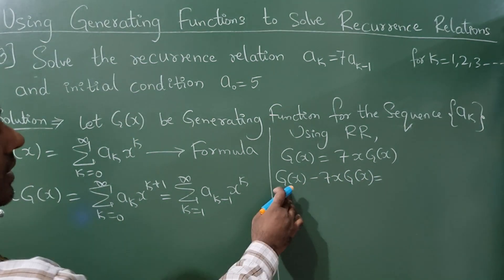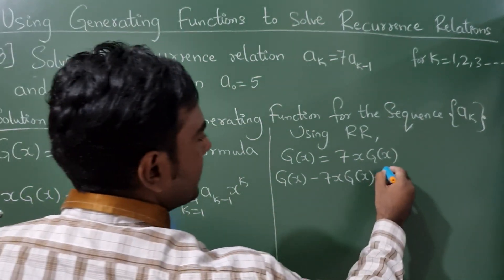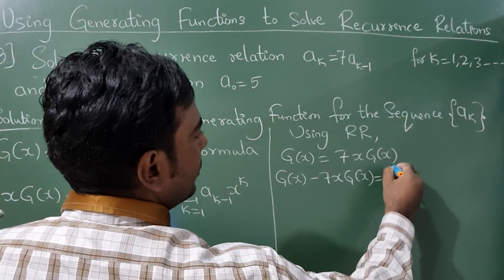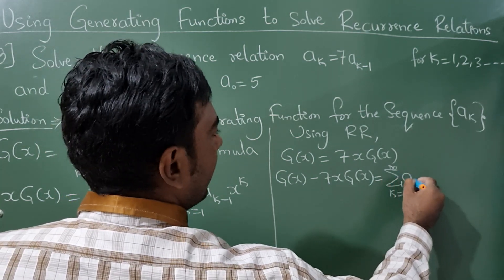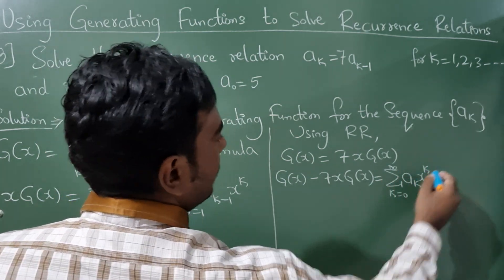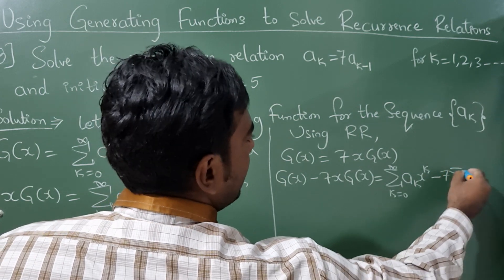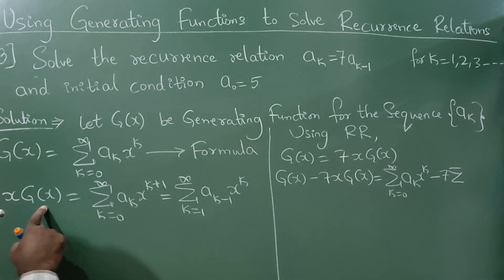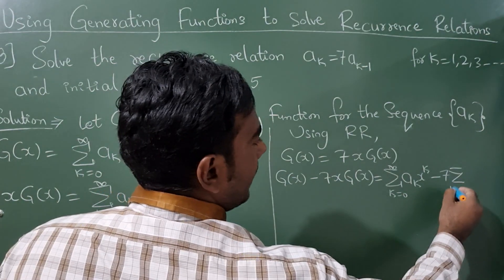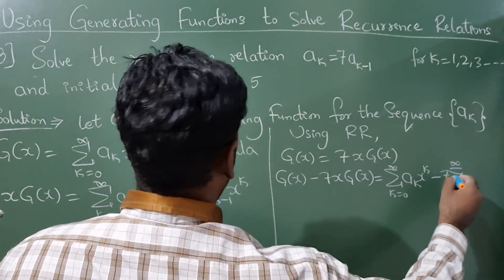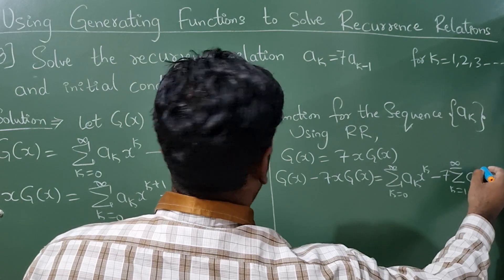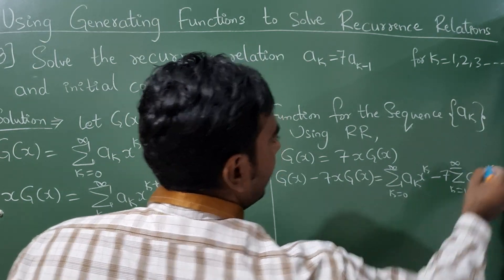Now g(x) equals summation k from 0 to infinity of a_k · x raised to k, minus 7 times the summation from k = 1 to infinity of a_{k-1} · x raised to k.